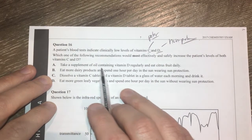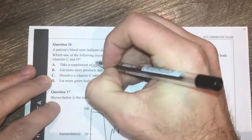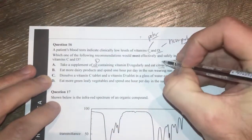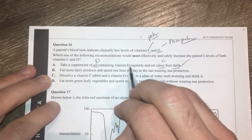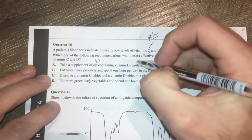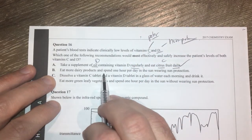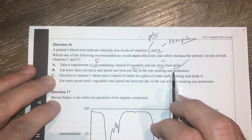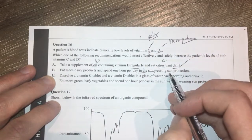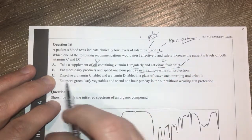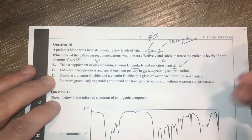Take a supplement of oil containing vitamin D regularly and eat citrus fruits daily. The oil is your vitamin D and your citrus fruits are your vitamin C. Daily is pretty good for that. Eat more dairy products and spend one hour in the sun wearing sun protection. I don't like the idea of spending time in the sun. Even with sun protection, not super safe. Dairy products are going to give you your vitamin D. Actually, both of these are going to be vitamin D. So you're not going to get your vitamin C from any of those.